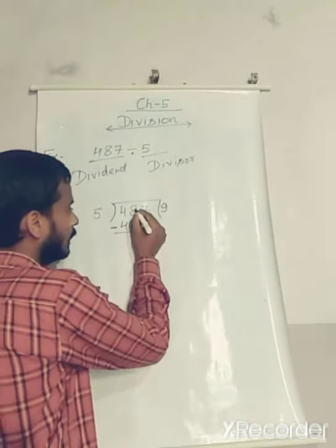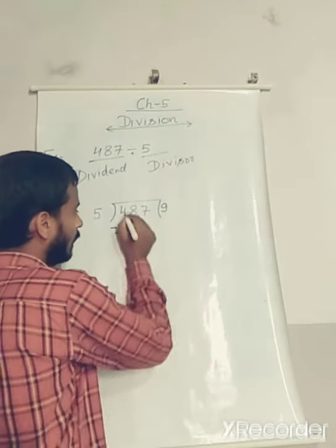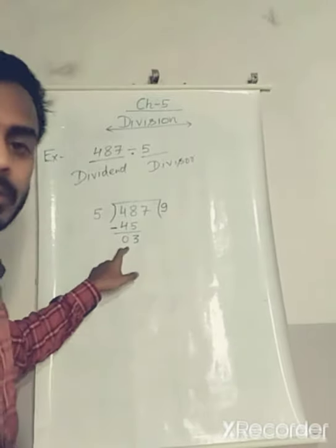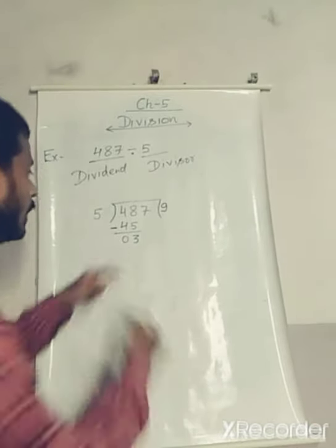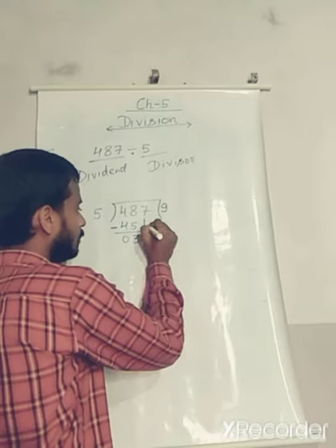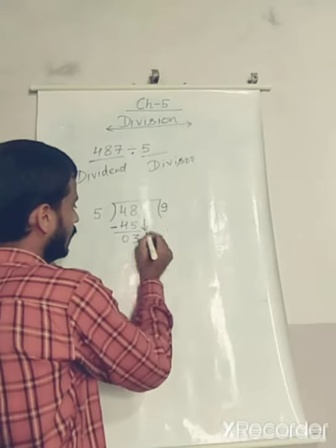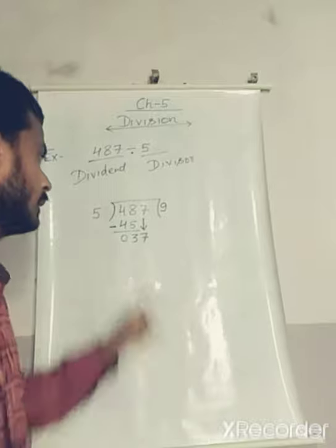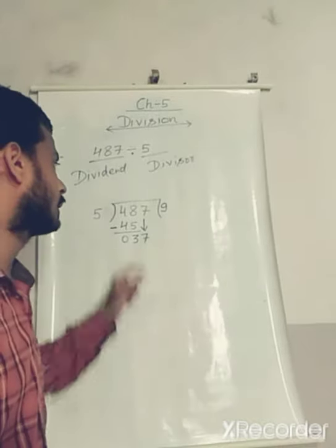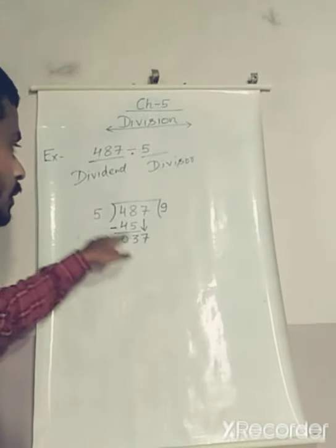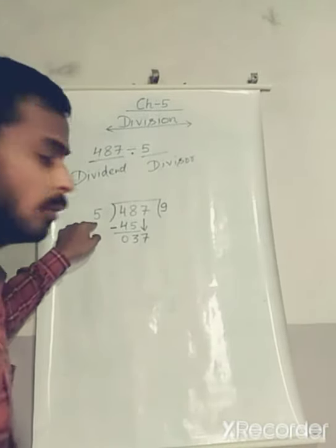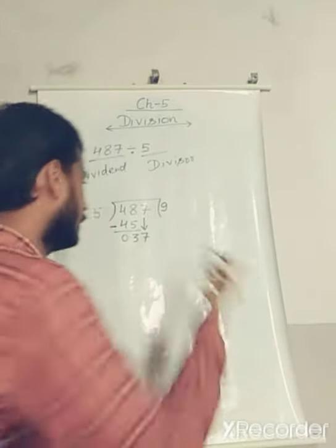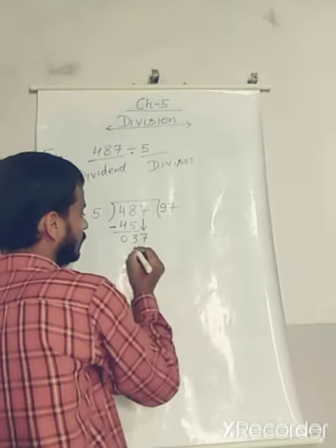Now subtract: 8 minus 5 is 3, 4 minus 4 is 0. You can use a cross also. Now take the next number — it becomes 37. Again, divide 37 by 5. 5 eights are 40, but we can't take 40 because 37 is less than 40. So take 5 sevens are 35.